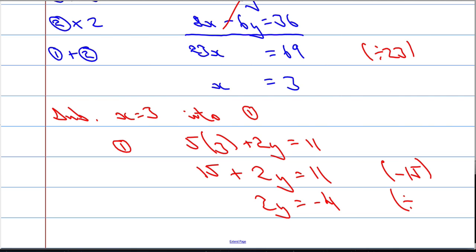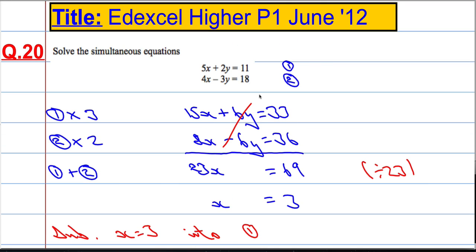Then I'm going to divide both sides by 2, so we get y equals minus 2. Now we've got x equals 3 and y equals minus 2, and that should satisfy both equations. In the exam, make sure you check it — I'm fairly certain it's right, but make sure you check it and get all those marks. Thanks.